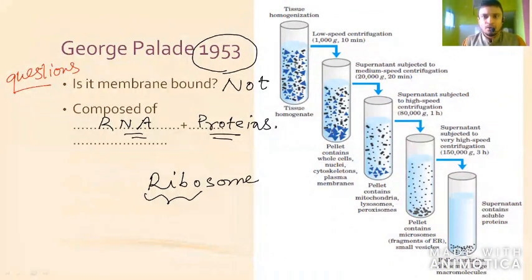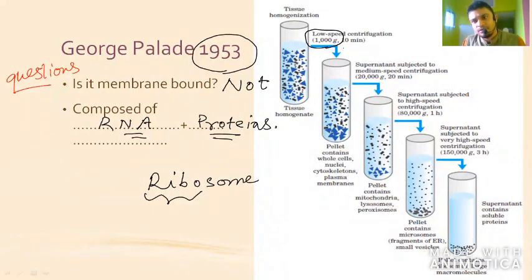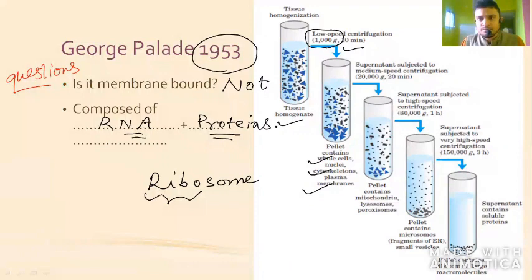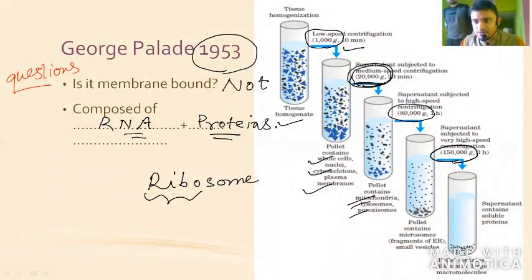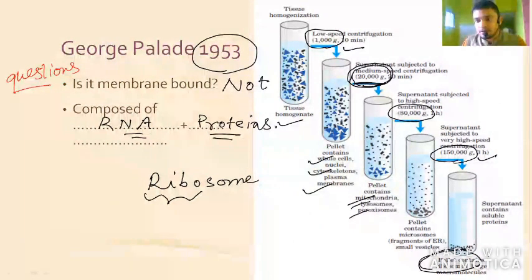If you homogenize a cell and centrifuge it, at 1000g within 10 minutes you get the tissue homogenate containing very large components, and in the pellet you get the nucleus, cytoskeleton, and plasma membrane. As you increase centrifugation speed — 2000, 20,000g and beyond — you get mitochondria, lysosomes, and peroxisomes. Finally, at 150,000g after three hours, you can isolate the ribosome in the pellet, indicating it is very small and composed of RNA and protein.